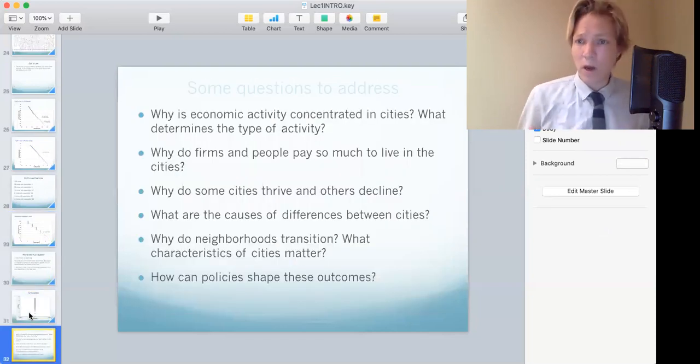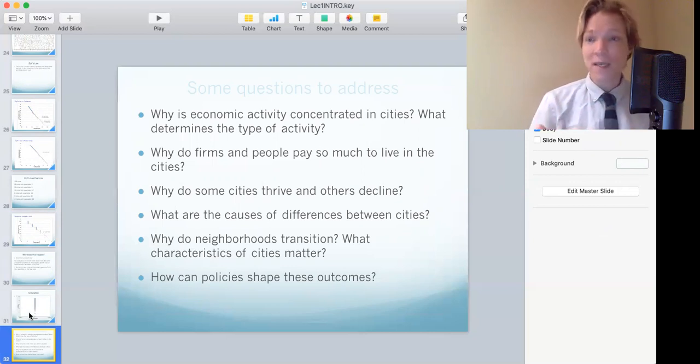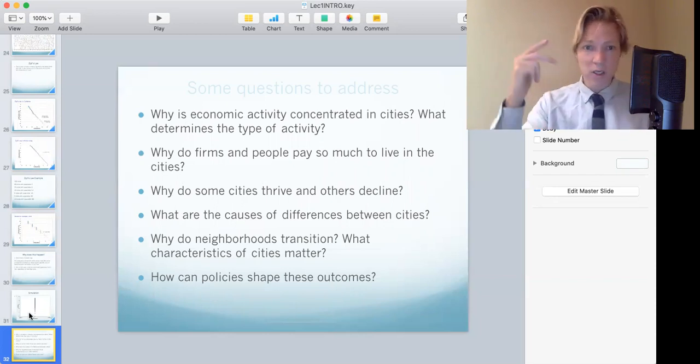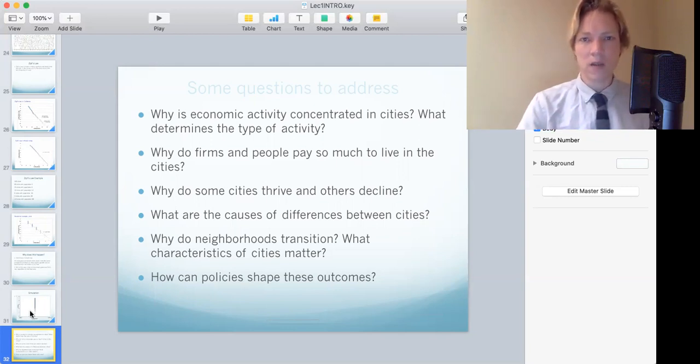OK, so in this class, what we're going to do, we're going to think about what is the advantage that the city offers? Why is economic activity really concentrated and what determines what type of activity, what determines what industry is located in which cities? Why do people and firms, so not only people, but firms have to pay a lot to rent space in cities. So why are they willing to pay that huge premium? Why do some cities decline? Detroit is one of the largest cities in the U.S. and it has declined. Like I mentioned, L.A. went from nothing to the second largest city. So what is driving those patterns? Why are cities different in these other characteristics, density, segregation, transportation networks? What's causing that? Why do neighborhoods transition? Why do neighborhoods go from being a low income neighborhood to a high income neighborhood? And what are the characteristics of those neighborhoods that really matter? And then finally, policies. What do policies have to do with all of these topics? OK, that is where we're going in this very, very short, shortened version of urban economics.